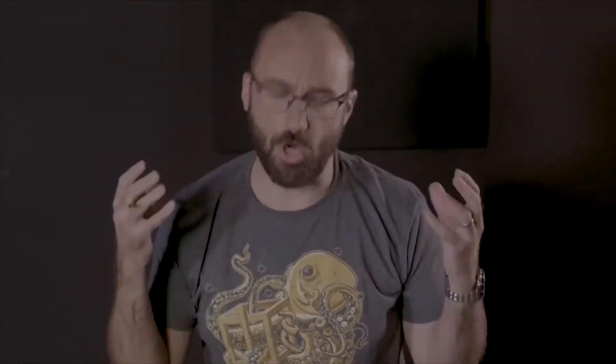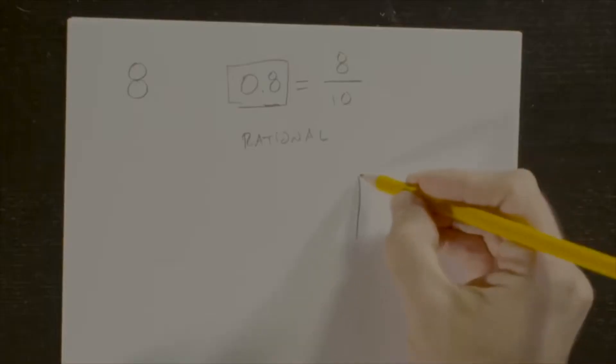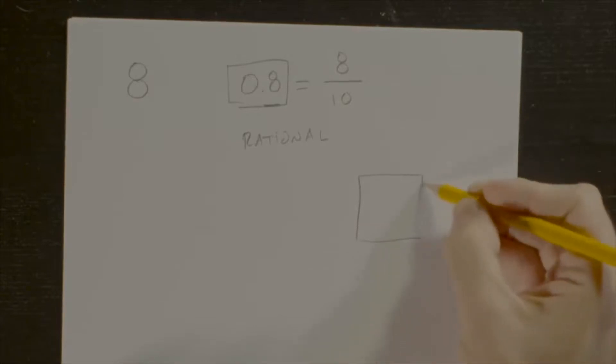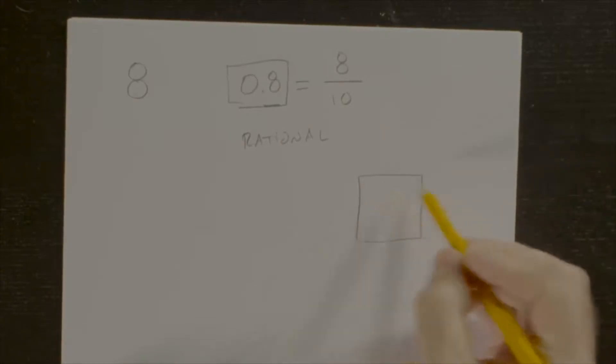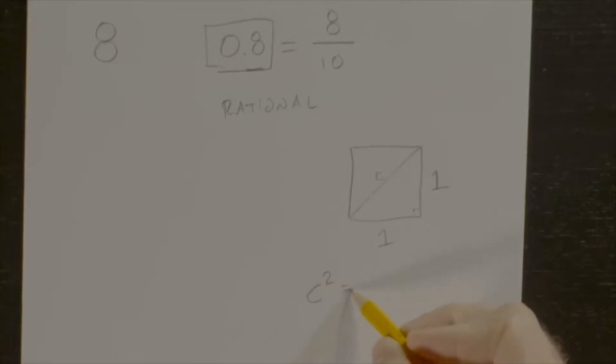Ancient mathematicians discovered irrational numbers. Think of a square with side length one. Every side of this shape is rational. The diagonal c satisfies c squared equals 2 by the Pythagorean theorem.